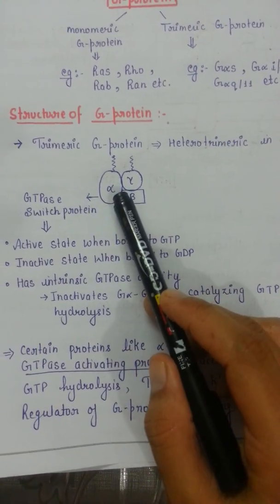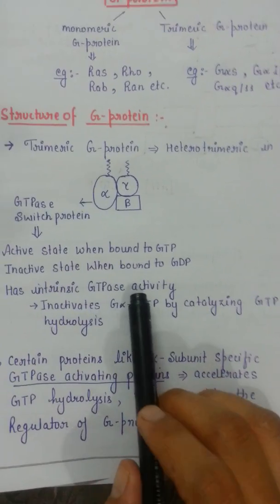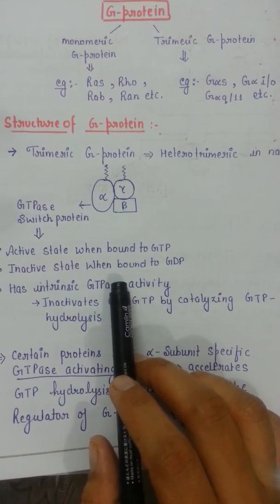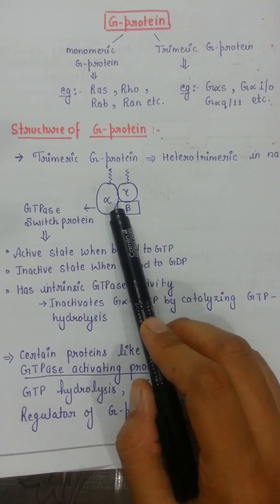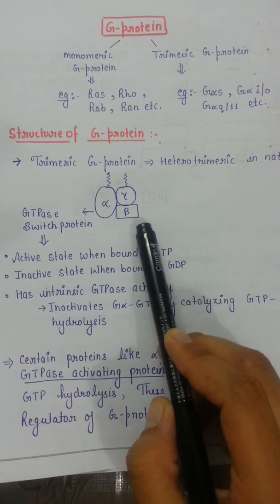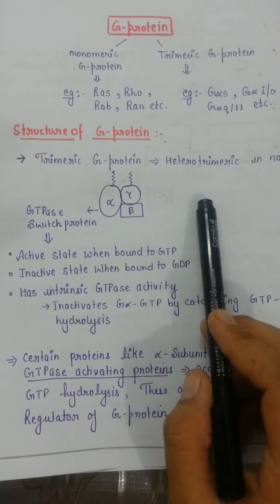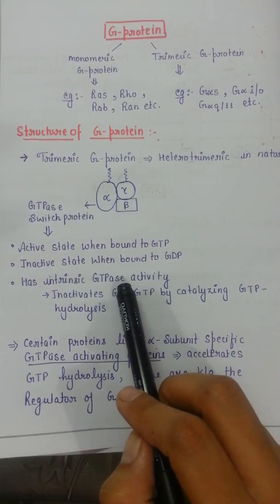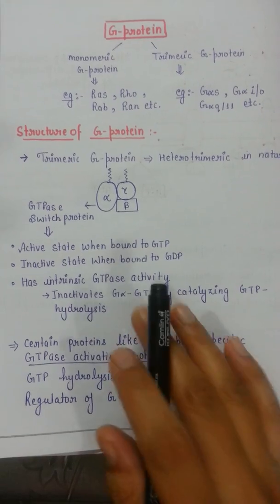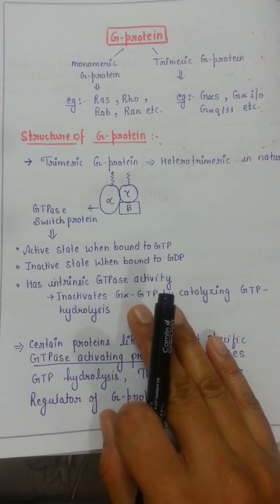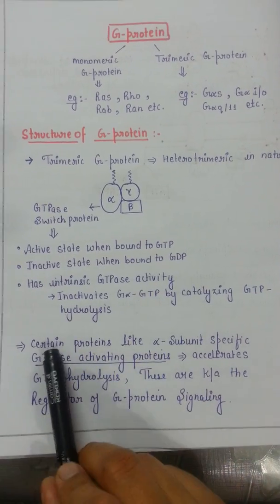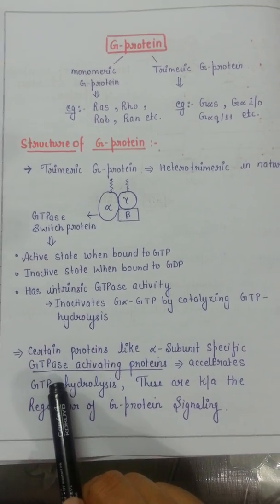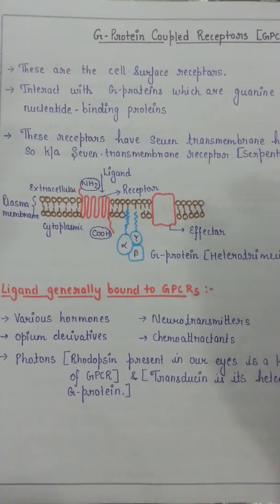The G-protein has intrinsic GTPase activity. Since signals may arrive continuously, this activity is necessary to stop the response from being generated continuously. In this activity, the GTP is hydrolyzed, the G-protein becomes inactive again, it releases from the effector, and second messenger formation stops. Certain proteins called GTPase-activating proteins, which are regulators of G-protein signaling, can accelerate this GTPase activity.